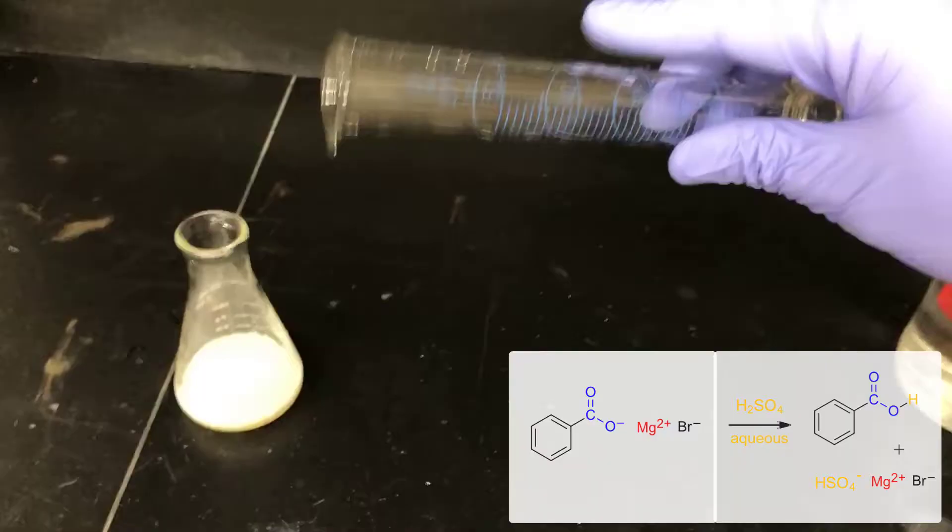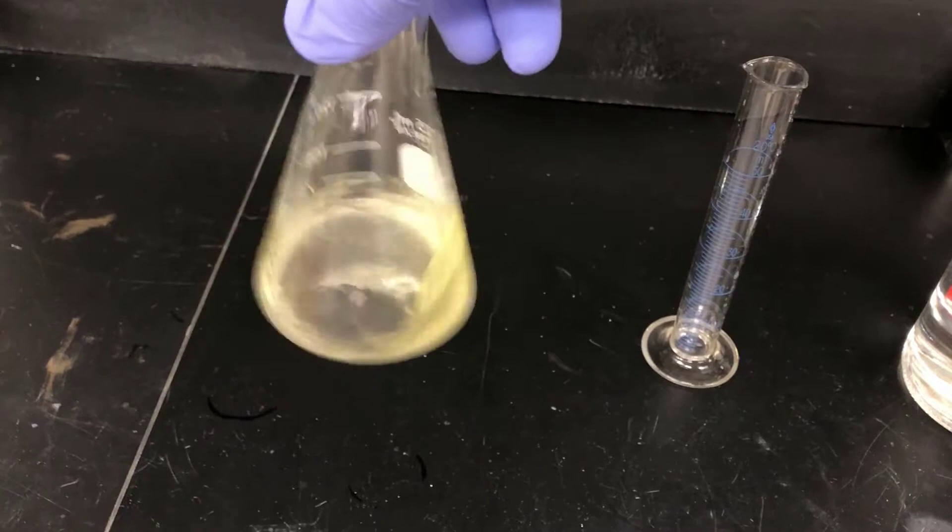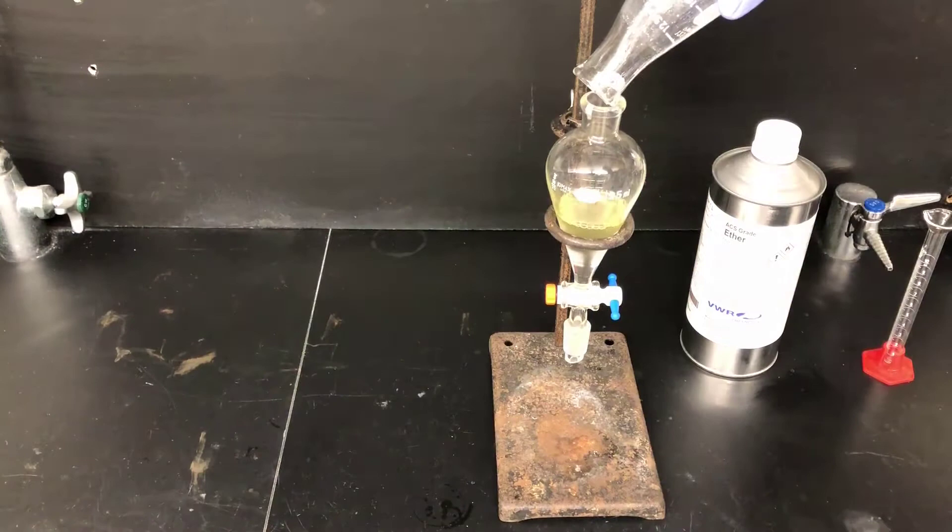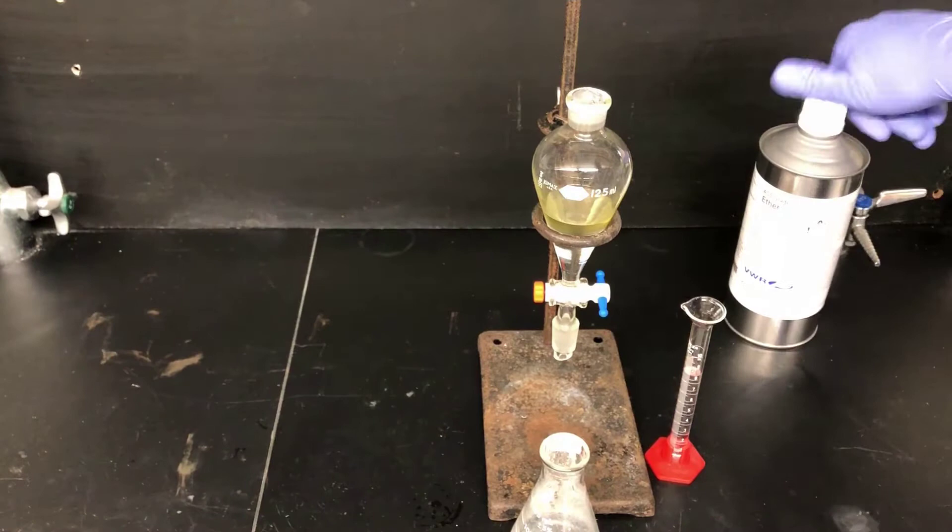It starts off as a milky-white mixture, but as I swirl it, that'll give way to two clear phases, an organic phase and a water phase. Now I'll pour that two-phase mixture into a separatory funnel so I can separate those layers. There's a lot of white residue on this Erlenmeyer flask. That's actually benzoic acid product, and to try to recover that, I'm going to rinse this flask with some ether. I'll measure out 8 milliliters of ether, then I'll use that ether to rinse the Erlenmeyer flask in two portions.